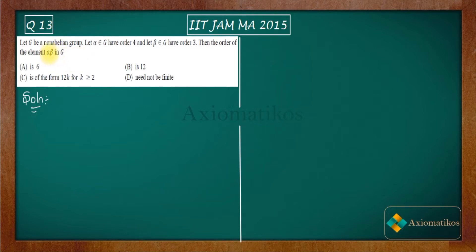The question is asking us for the order of the product alpha beta. The most important thing given is that G is a non-abelian group. Alpha and beta have orders 4 and 3 respectively. Now why is this non-abelian condition so important?